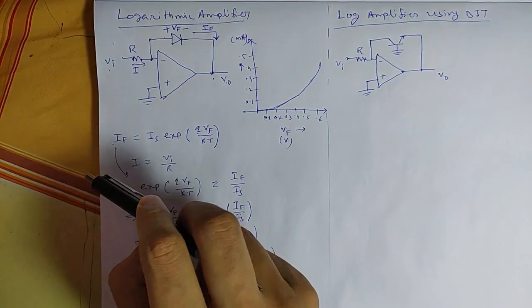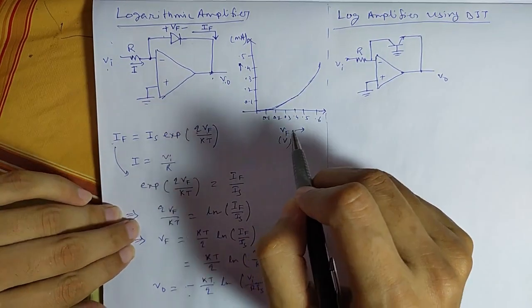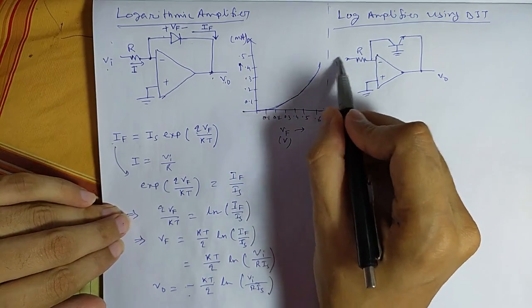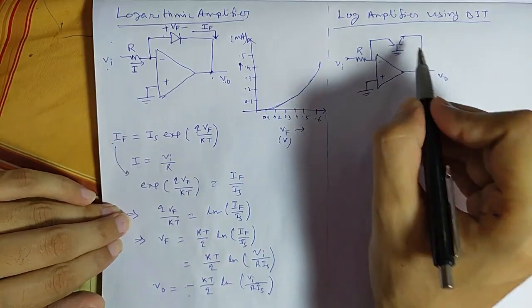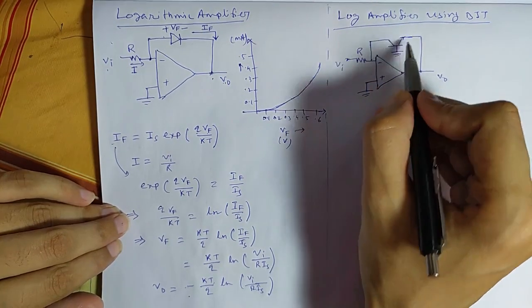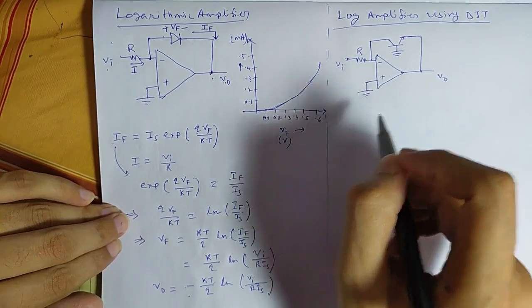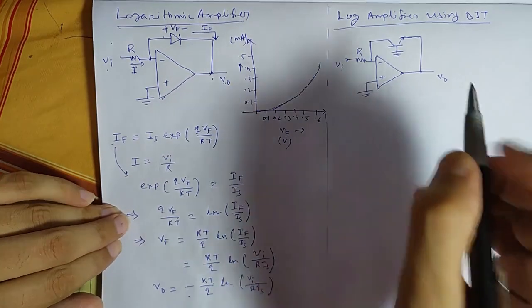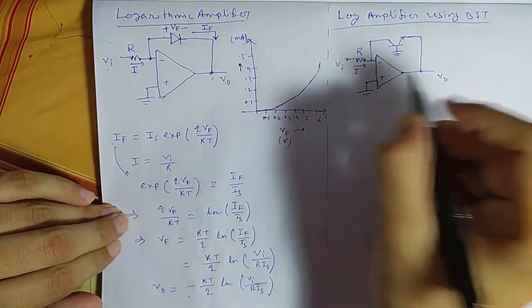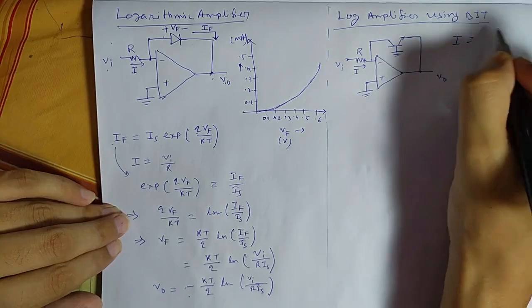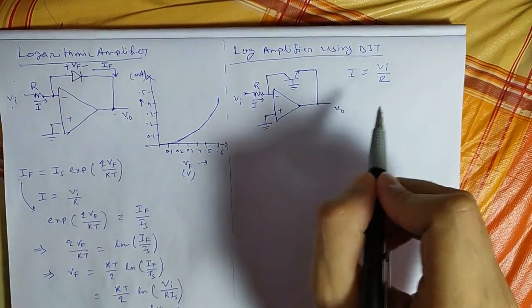Now in this circuit we replace the diode by a BJT. As VI is positive here, output will be negative. As a result, for the NPN transistor, P is ground and N is some negative potential, so this junction will be forward biased. There will be a current I, and I will be VI by R.